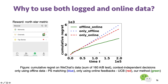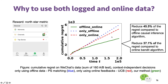We also conduct experiments on WeChat data. The decision is on the notification strategy as mentioned before, and the reward is a North Star metric to evaluate the system in the company. Our algorithm can reduce the regret by 45% compared to the offline causal inference algorithm and reduce the regret by 37% compared to the online bandit algorithm.